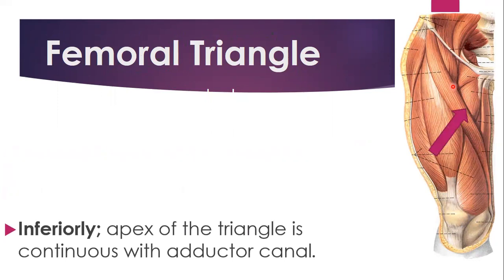We also have the inferior apex. The apex is formed inferiorly by the borders of the adductor longus and the medial border of the sartorius coming together, because this is an inverted triangle. The apex of this femoral triangle continues directly with the adductor canal, also called the sub-sartorius canal, or Hunter's canal.